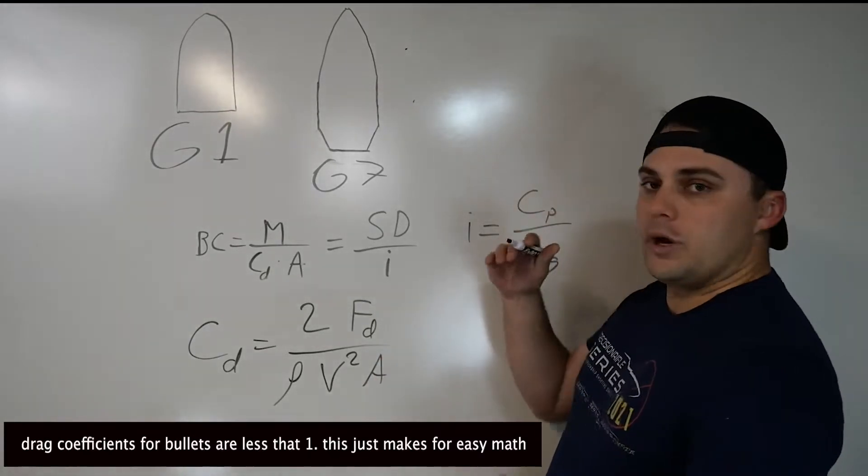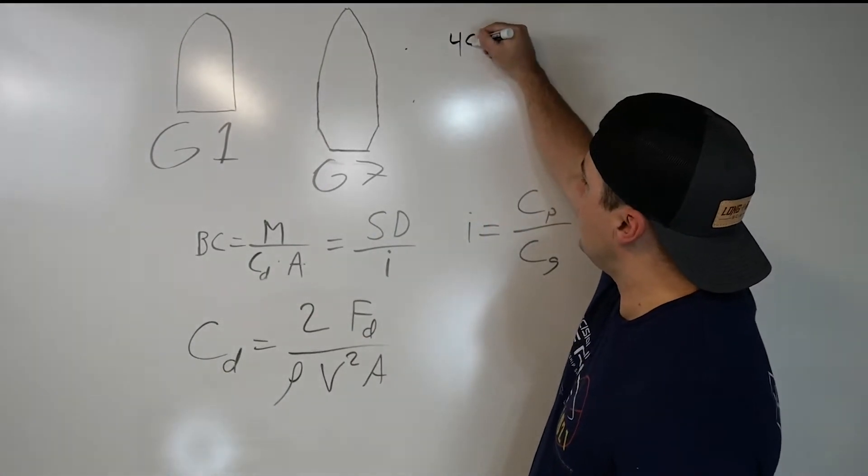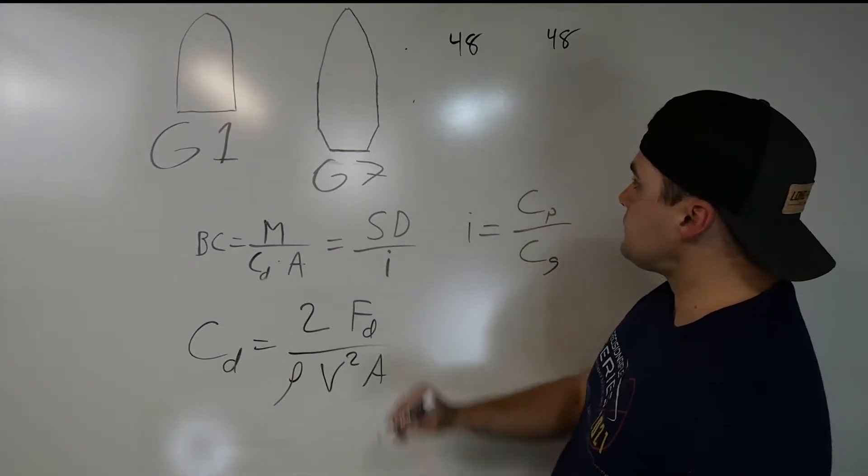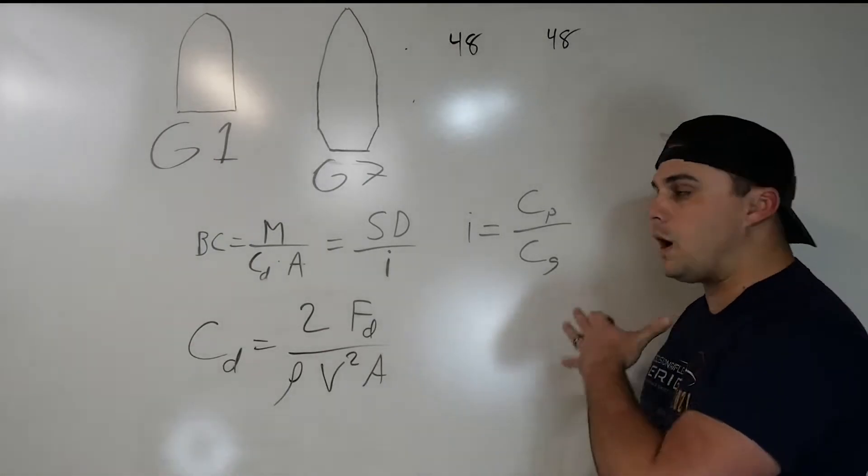Just kind of purely using some random numbers here, let's say that the bolt I want to use has a drag coefficient of 48. So we'll do 48 over here, 48 over here.